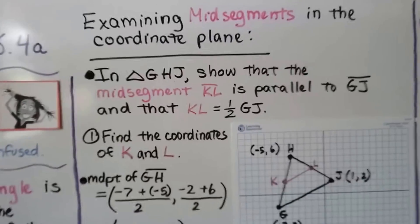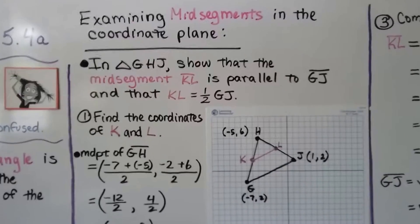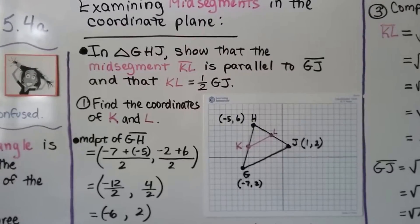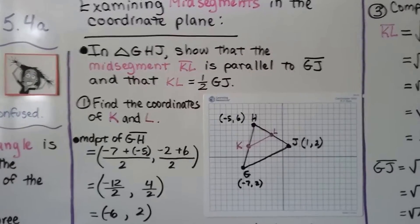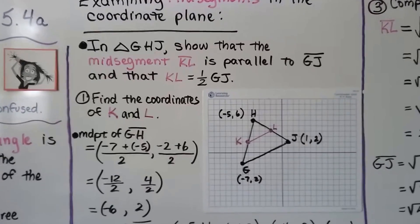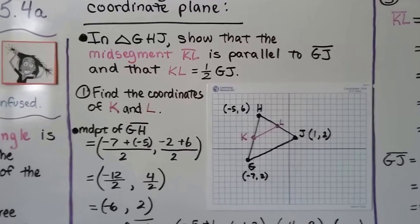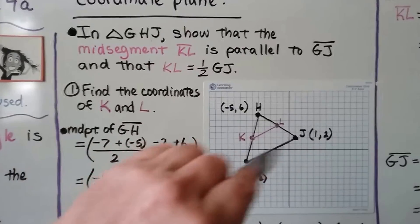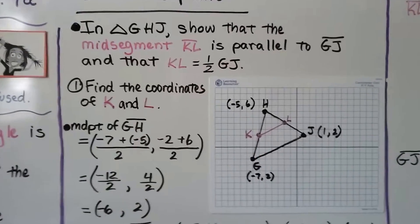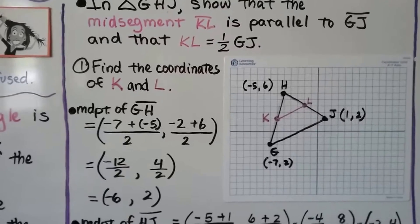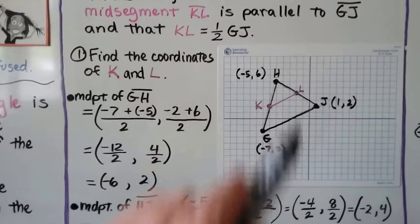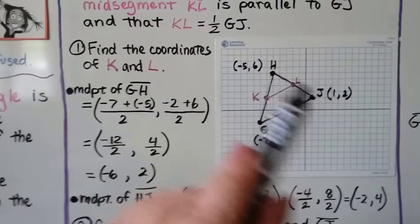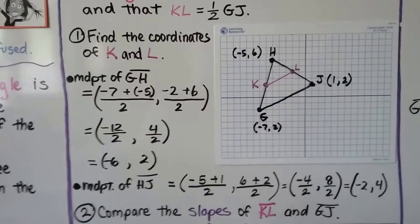Examining mid-segments in the coordinate plane: in triangle GHJ, show that mid-segment KL is parallel to segment GJ and that KL is half of GJ. We've got this pink mid-segment and we want to show it's parallel to GJ. We find the coordinates of K and L by finding the midpoint of GH and the midpoint of HJ, using the midpoint formula.